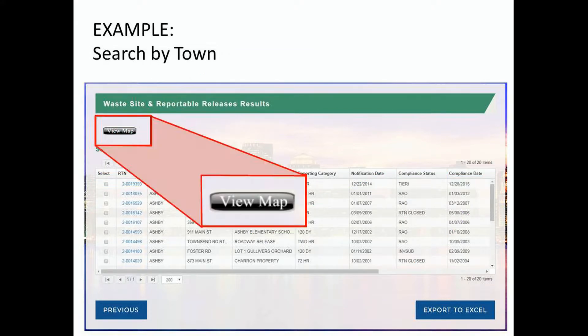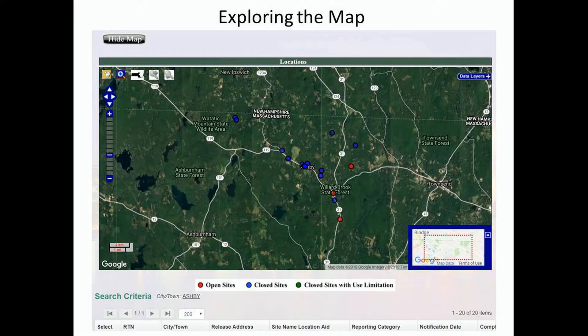You'll also notice that there's a big 'View Map' button in the upper left-hand corner of the results box. You now see a map that shows you most, if not all, of the sites in Ashby. Keep in mind that if you're looking at a town that has multiple pages of sites, this map will only show you those sites on that first page. You'll have to go back, look at the next page, and view map for that set of sites as well. Notice that the different colored dots have different meanings: red is for open sites, blue for closed sites, and green for closed sites with activity and use limitations.